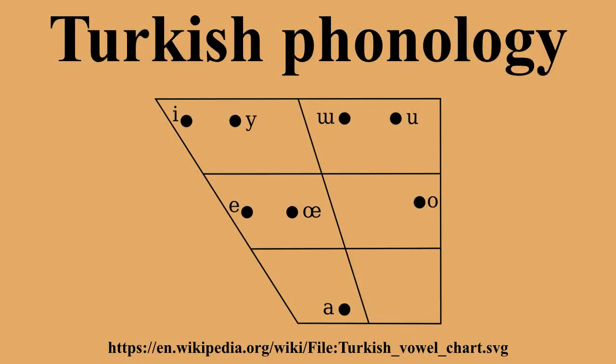Vowels. The vowels of the Turkish language are, in their alphabetical order: A, E, I, İ, O, Ö, U, Ü. There are no diphthongs in Turkish, and when two vowels come together — which only occurs in some loanwords — each vowel retains its individual sound. E, O, Ü are phonetically mid. Most speakers lower E before the coda consonants N, L, R.